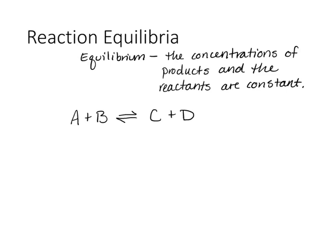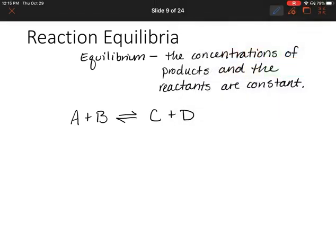You might remember from general chemistry that the forward reaction occurs at a specific rate and the reverse reaction also occurs at a specific rate. We'll label those KF for forward rate and KR for reverse rate. At equilibrium, the rate of the forward reaction and the rate of the reverse reaction are the same — that's another way to think about equilibrium.